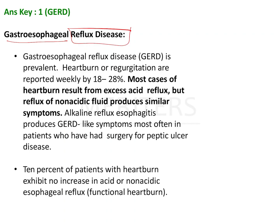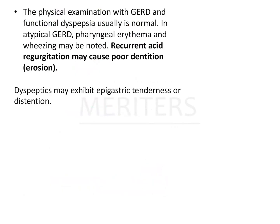Gastroesophageal reflux disease is generally associated with heartburn because there will be regurgitation of acidic food. Sometimes the food is not acidic, but when reflux occurs there will still be a similar feeling of heartburn. The fluid can be non-acidic or acidic, and both produce the same symptoms. Only 10% of patients with heartburn exhibit no increase in acidic or non-acid esophageal exposure. Recurrent acid regurgitation, when it occurs, causes direct contact with the upper teeth and causes erosion of the lingual aspect of the dentition.